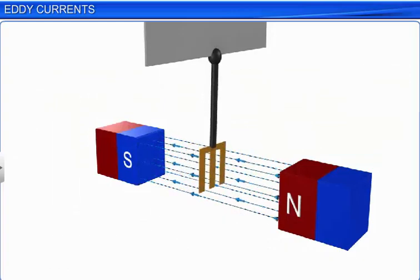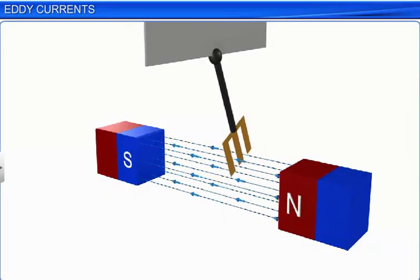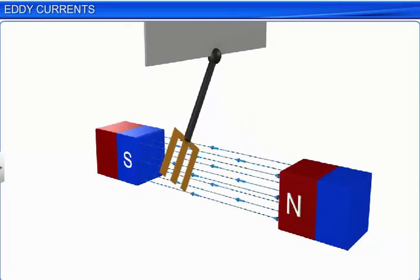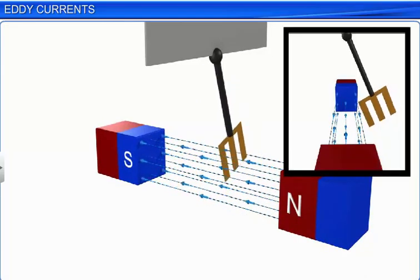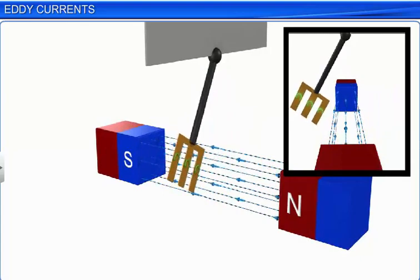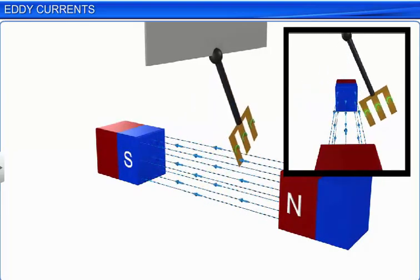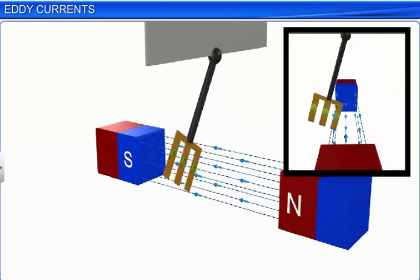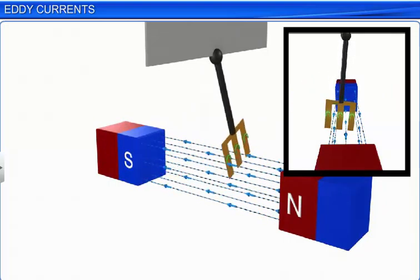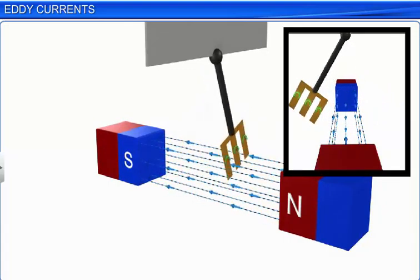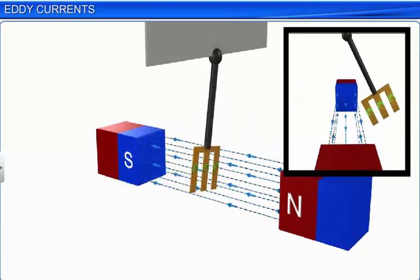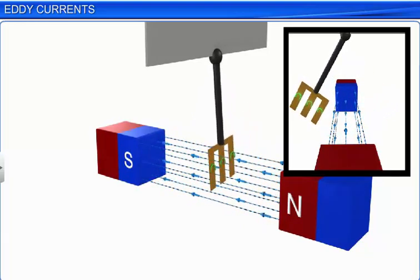When rectangular slots are cut in the plate, eddy currents and the corresponding retarding force are greatly reduced. This reduction in the retarding force is because the rectangular cuts in the plate prevent the formation of large current loops. Hence, the pendulum plate with holes or slots reduces electromagnetic damping, and the plate swings more freely.